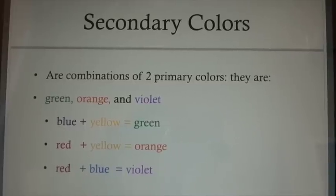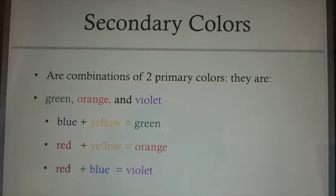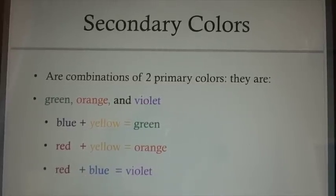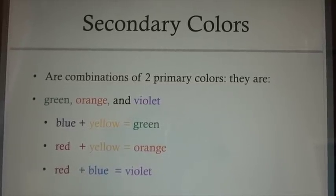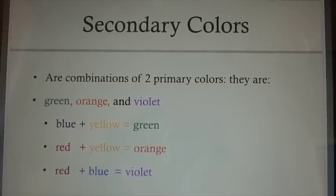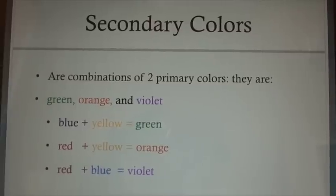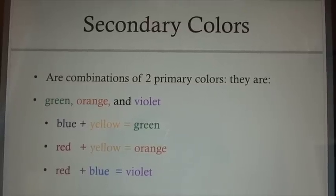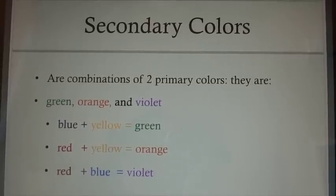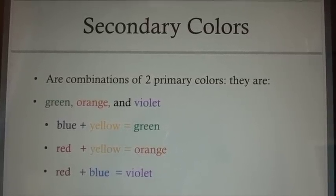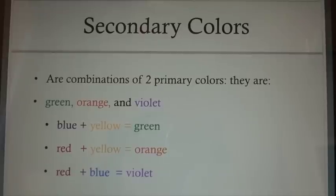Secondary colors are combinations of two primary colors. They are green, orange, and violet. Blue plus yellow equals green. Red plus yellow equals orange. Red and blue equals violet.